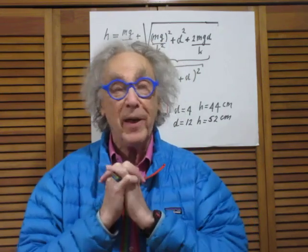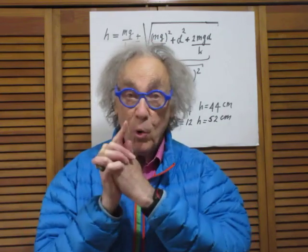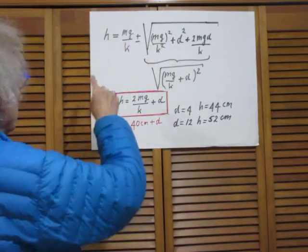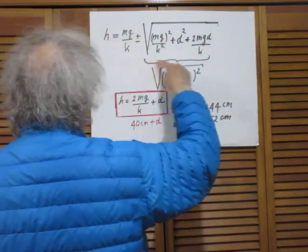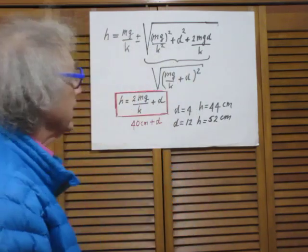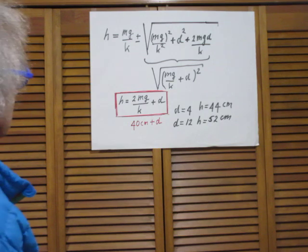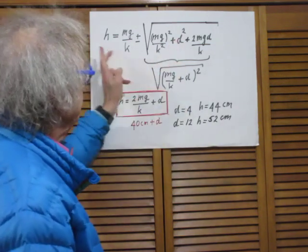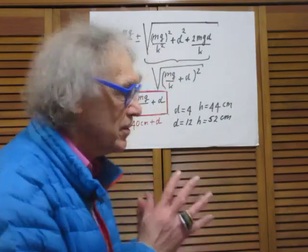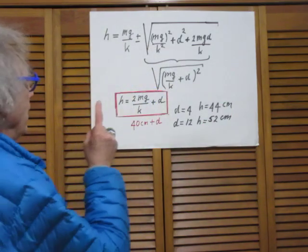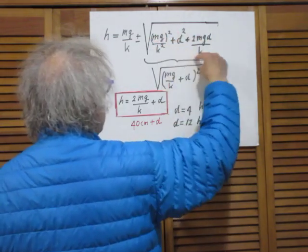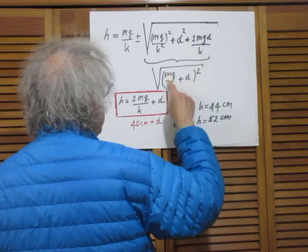The answer is really staring you in the face if you look at my posted solution. I derived this using the work-energy theorem, so I will not go over that again. Indeed, you can confirm that when d is zero, h equals 2mg divided by k, which is 40 centimeters.